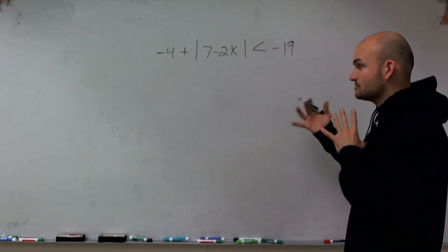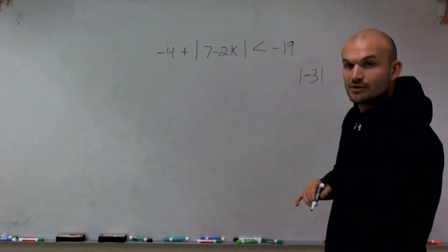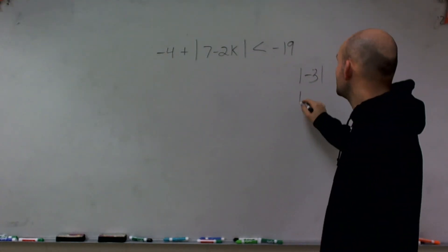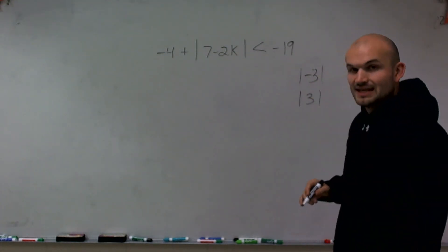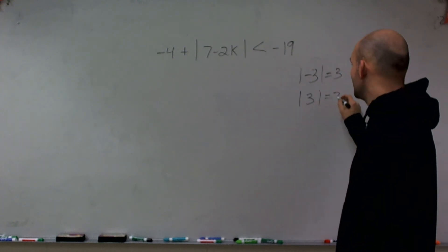Now, the main important thing I always want to make sure we go through is when dealing with absolute values, we need to set up two different situations. Because if I take the absolute value of -3, we know that value is 3. The absolute value of positive 3 is also 3.